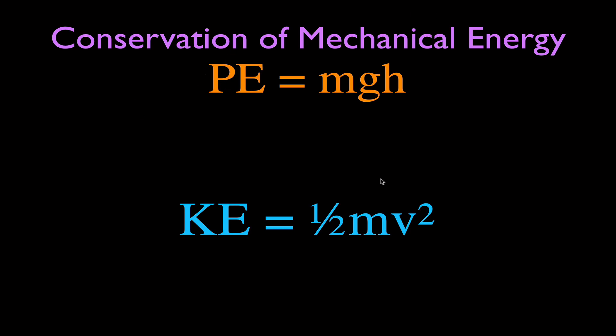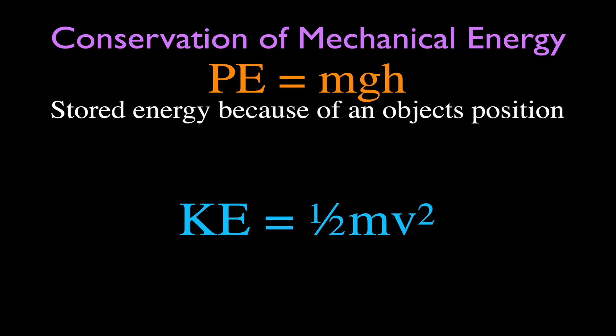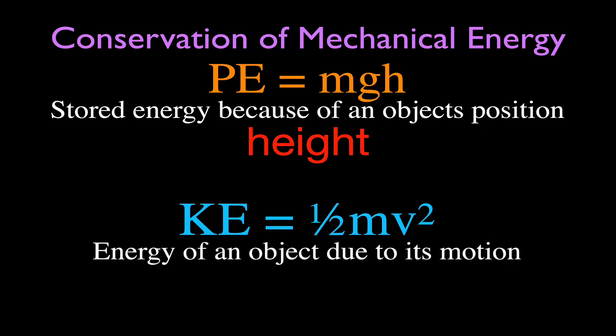We're going to be talking specifically about potential energy and kinetic energy. Potential energy — gravitational potential energy — is stored energy because of an object's position, due to its height above some reference surface. The potential energy is related to the object's mass, the acceleration due to gravity, and most importantly its height. When you swing a pendulum you're not really changing the mass or gravity, but you are changing height.